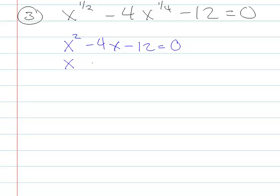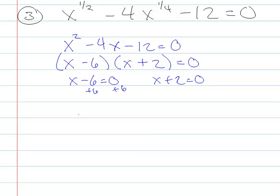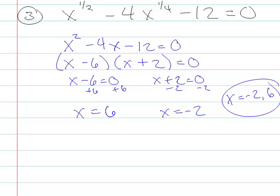We wish we had x squared minus 4x minus 12 equals 0. Because if we did, we could rewrite that as x minus 6, x plus 2 equals 0. So x minus 6 is 0, or x plus 2 is 0. So x equals 6, or x equals negative 2. Not too bad. So we like that. Unfortunately, again, that's not the problem that we have.